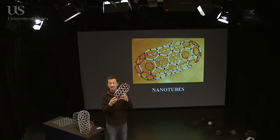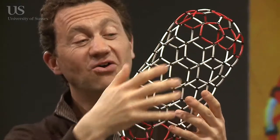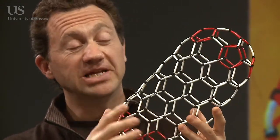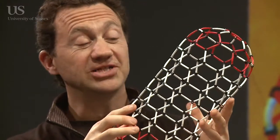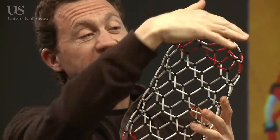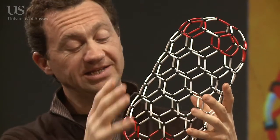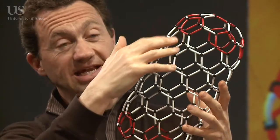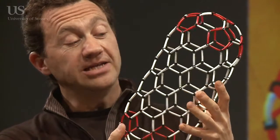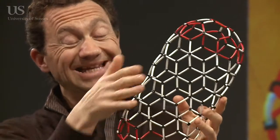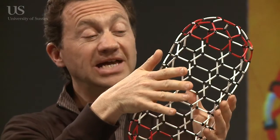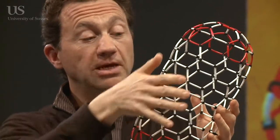Carbon nanotubes are revolutionising nanotechnology. This is a model of a carbon nanotube, and it looks a bit like a fullerene structure. Actually, if you look at the structure, it's almost like half a buckyball on one end and half a buckyball on the other end, with these extra atoms between. It's about a nanometre across — that's a thousandth of a millionth of a metre — and that's why they're called nanotubes.